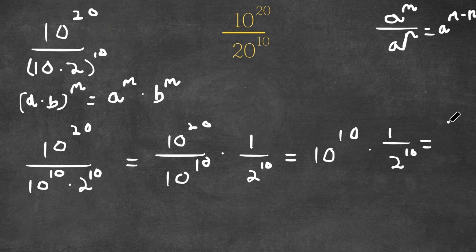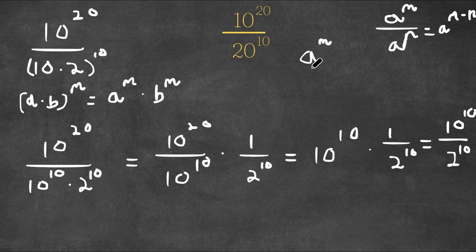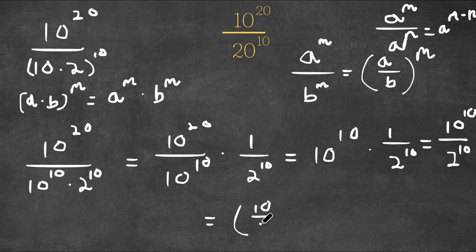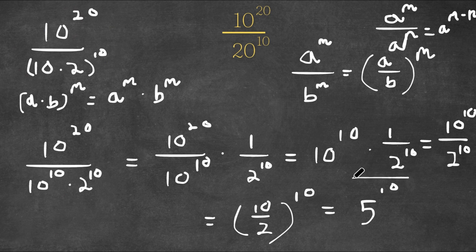And this is the same thing as 10 to the power of 10 over 2 to the power of 10. Now if I have something in the form a to the power of m over b to the power of m, this is equal to (a over b) to the power of m. So 10 to the power of 10 over 2 to the power of 10 equals (10 over 2) to the power of 10, which equals 5 to the power of 10. So 5 to the power of 10 is our answer.